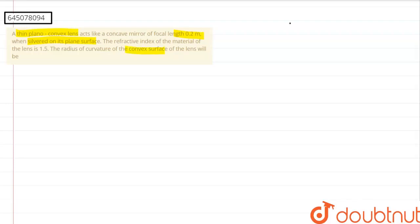Let us first make our lens. This is our plano convex lens and it is said that it is silvered on its plane surface. As of now, we have the focal length given for it as 0.2 meters or 20 centimeters